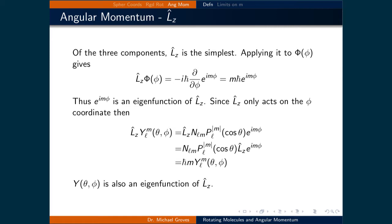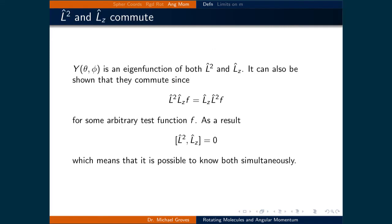Since Lz acts only on the phi coordinate, we can apply it to the complete solution for the rigid rotator, Y. The theta components are not affected by the operator, so all those pieces move out to the front, and therefore it only acts on the e to the im·phi part. The result is that the solution of the rigid rotator, Y, is returned times h-bar times m. Therefore, the solution to the rigid rotator is an eigenfunction of the Lz operator. We have shown that Y is an eigenfunction of both the total angular momentum squared and the z component of the angular momentum, so applying these operators to the wave function returns the total angular momentum and the z component respectively.